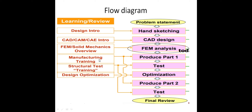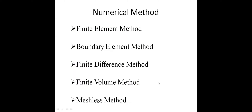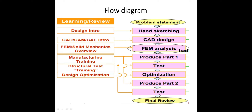Next in the flow diagram is manufacturing training — produce a part, then test it. Any structural test of two or more components, we are going to optimize. The final product we verify, test, and revise. This is the general flow diagram any industry follows.